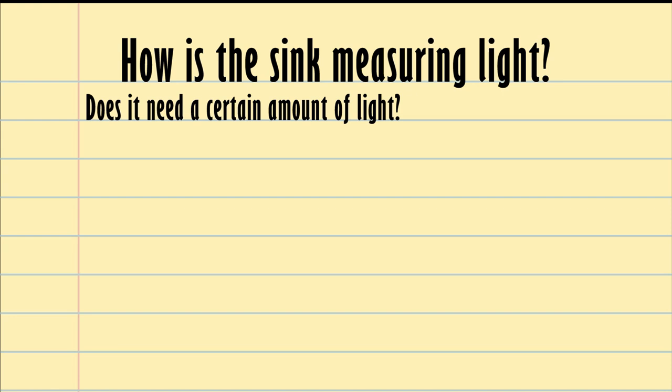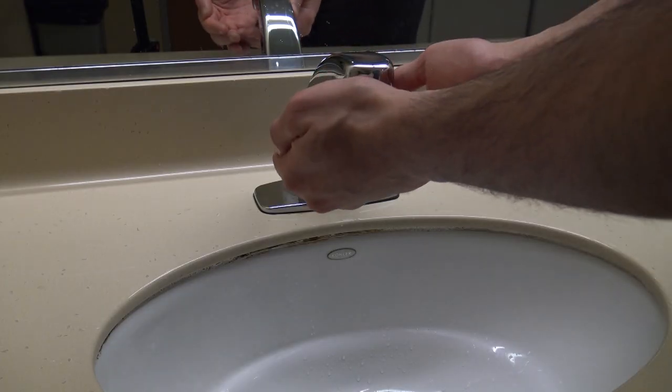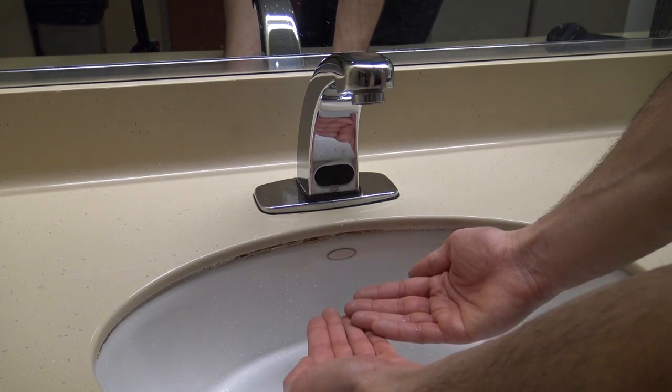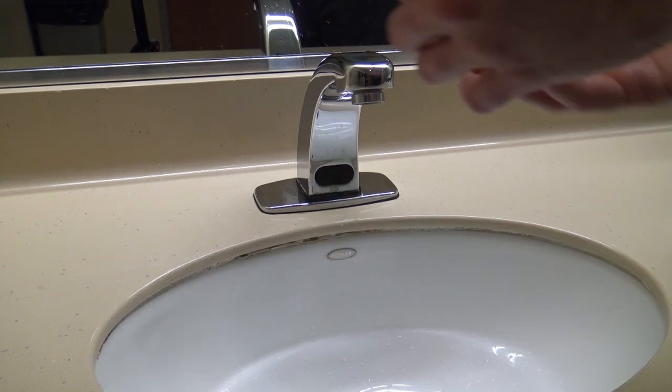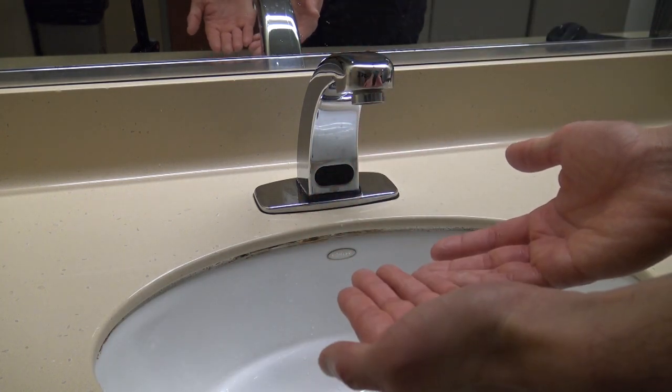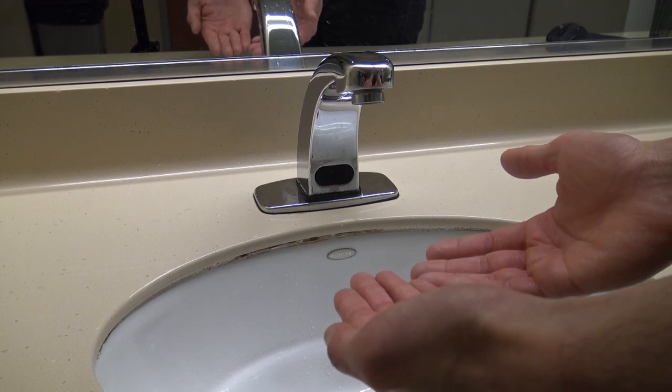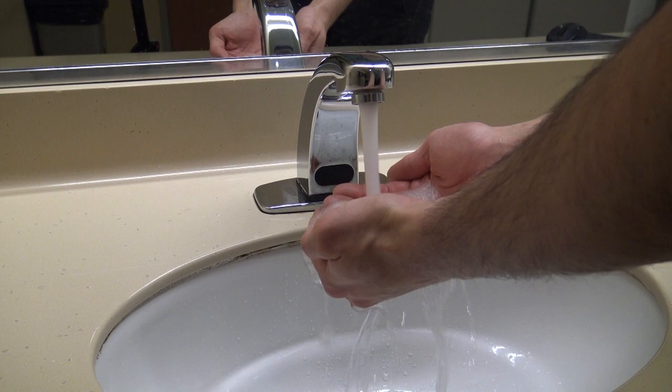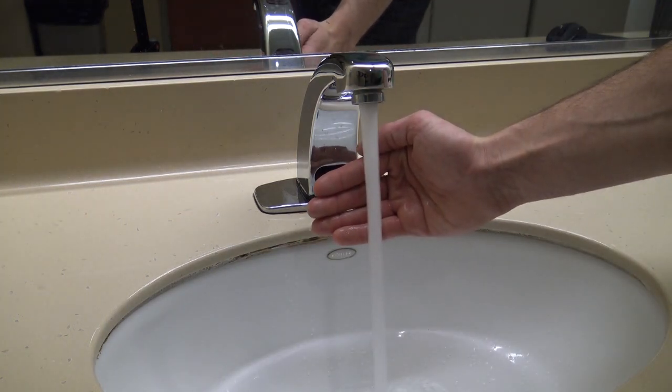So now we know the sensor needs a certain amount of infrared light reflected back, but does my hand location matter? When I try all these different places for my hands in the sink, we could think about the different amounts of infrared light that is being reflected back to the sensor. All of these places reflect too little infrared light, but when my hands are right in front of the sensor, enough light is reflected back to turn the sink on.